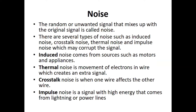Next, coming to the next impairment, that is noise. Noise is an unwanted signal added to the original signal. There are different types of noises: induced noise, crosstalk noise, thermal noise, and impulse noise. These noises corrupt our original signal.